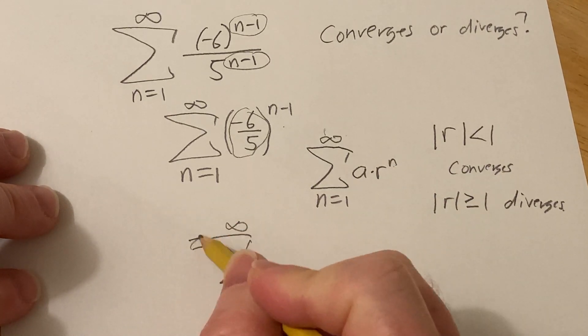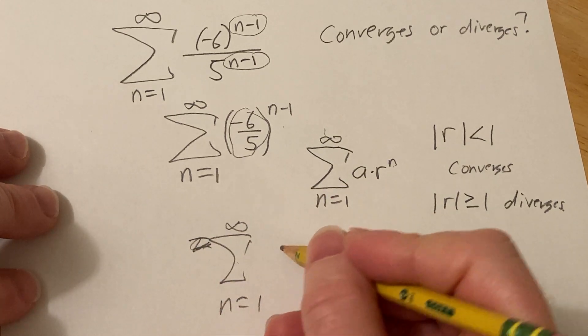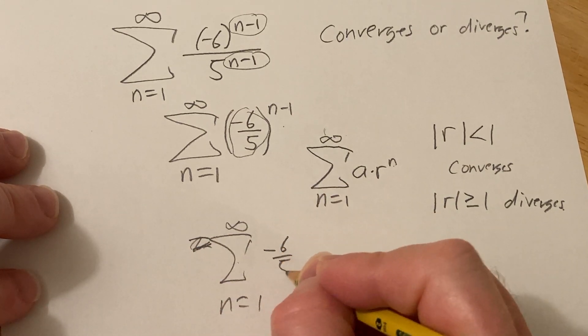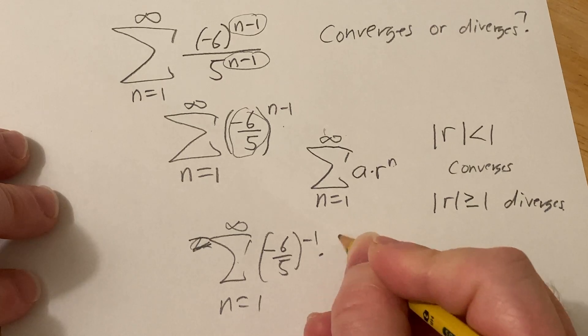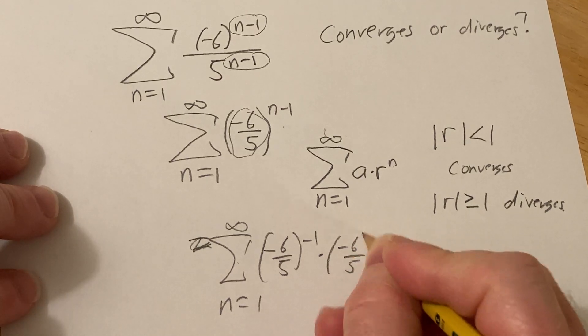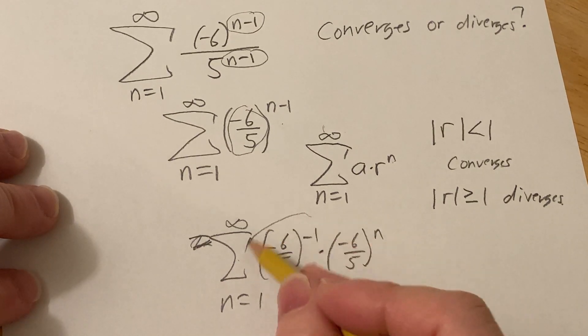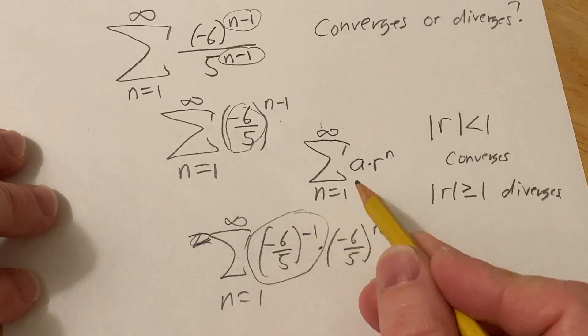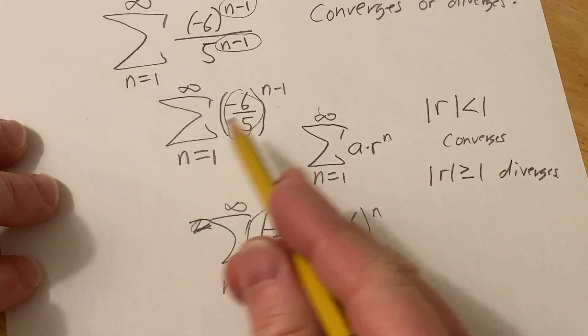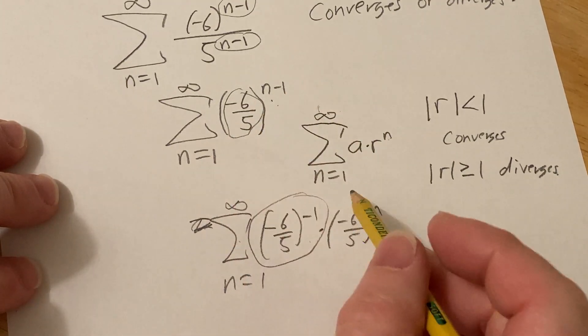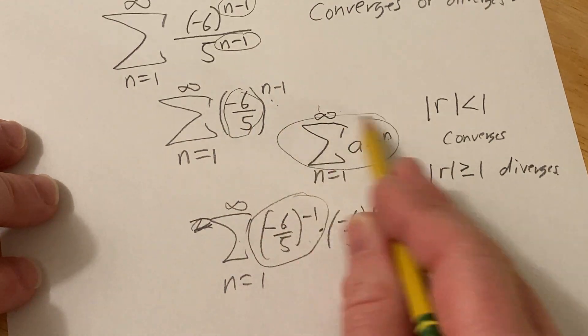n equals 1 to infinity. You can write it like this. Negative 6 fifths to the negative 1 times negative 6 fifths to the n. And basically, this whole piece here is your a. So it doesn't really matter, right? So it doesn't matter if there's an n minus 1 or an n. It's still going to be in this form.